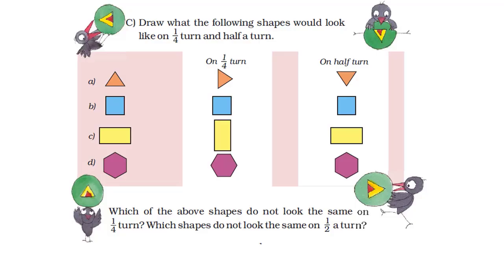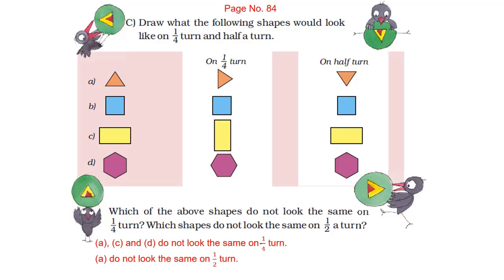Now in this table, you can draw the shapes showing how they look on one-fourth turn and on half turn. Let us answer the question given below. Triangle, Rectangle, and Hexagon do not look the same on one-fourth turn. And Triangle does not look the same on half turn.